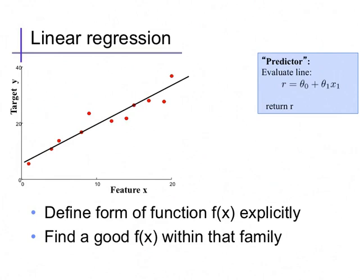In contrast, here's another predictor we'll spend more time on, the linear predictor. Here, the predictor evaluates a linear function of the feature, computing some value, say theta zero, and adding theta one times X, and then outputting that prediction. Tracing out the values of this prediction on various values of X exactly shows this equation. The functional form of F of X is explicitly defined within this procedure.